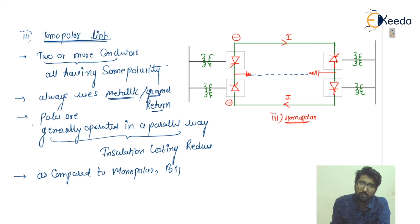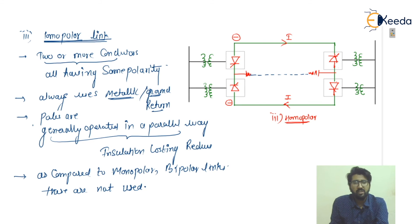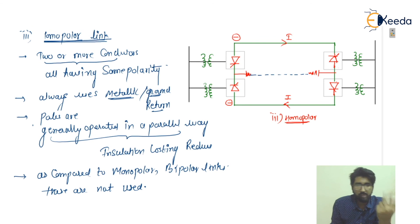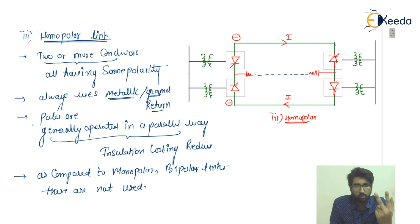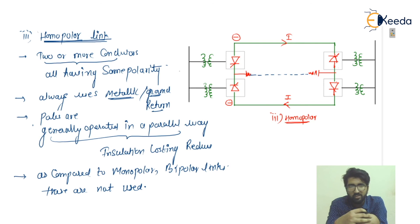Homopolar links are not generally used. The widely accepted links are monopolar and bipolar. To summarize: in monopolar links there is one conductor with ground return; in bipolar links there are two conductors with no ground return; in homopolar links there are two conductors with the same polarity and a ground return. Negative conductors are chosen in all cases due to their low corona effect.